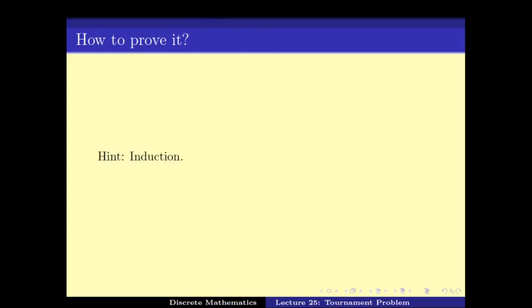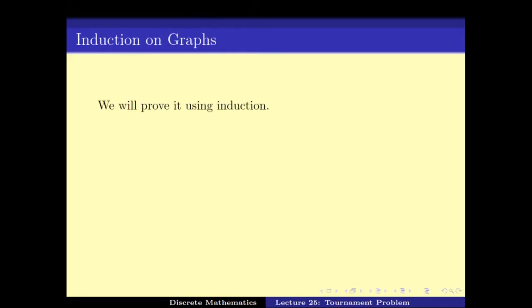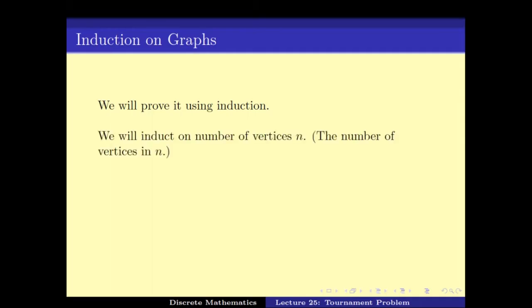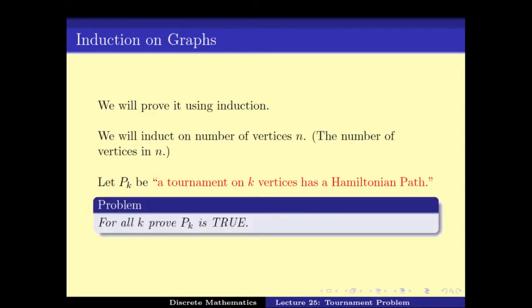The hint is induction. We prove it by induction on the number of vertices. Let P(K) be the statement that a tournament on K vertices has a Hamiltonian path. We have to prove P(K) is true for all K. This requires three steps: base case, induction hypothesis (assume true for some K), and then prove it for K+1.